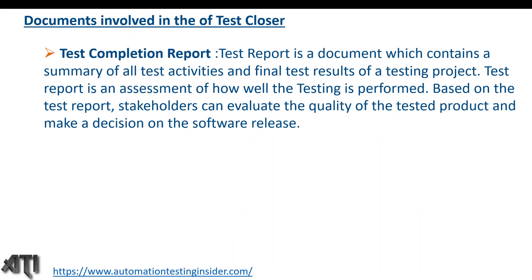Now, what are the documents involved in the test closure process? The test completion report is the most important one. It is a document that contains a summary of all activities and final test results of the testing project. The test report is an assessment of how well testing was performed, and based on it, stakeholders can evaluate the quality of the tested product and make a decision on the software release.